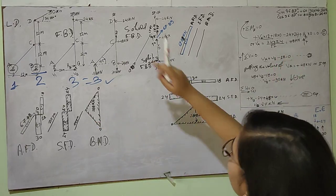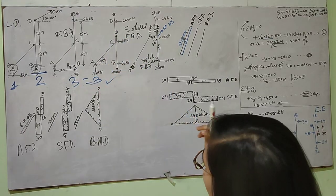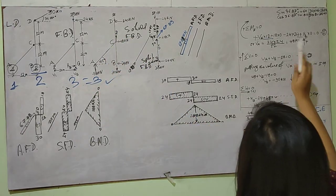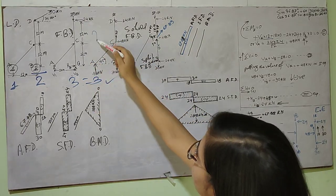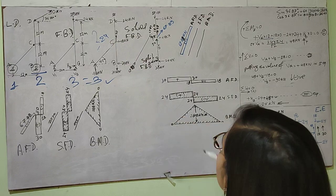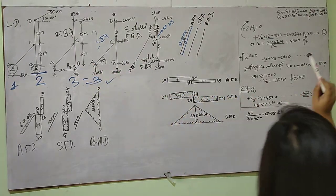First, VA into 12 - this gives a clockwise moment with perpendicular distance of 12. Then 18 into 0 because this is acting in the line of action, so it gives no perpendicular distance. Then minus 24 into 24, which is acting anti-clockwise with perpendicular distance of 24.